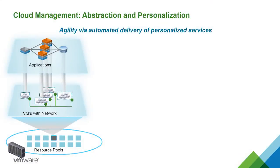Drilling further into cloud management and cloud automation, this slide shows the relationship between core management of your infrastructure and working on things like intelligent placement — figuring out the kinds of resources that people get based on their role and the set of permissions they have within the organization — with what we traditionally think of for DevOps in terms of continuous integration and continuous delivery.